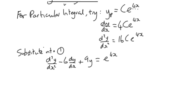For the second derivative we've got 16Ce^(4x), then minus 6 lots of the first derivative 4Ce^(4x), and then we add 9 lots of the original particular integral Ce^(4x) equals e^(4x).